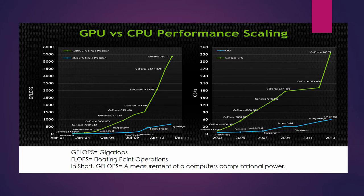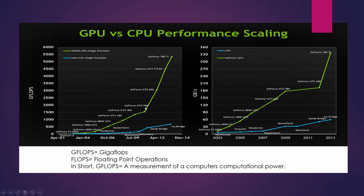Why GPU rendering? With this performance sheet provided by NVIDIA, GFLOPs equals GigaFLOPs, and FLOPs equals floating-point operations. In short, GFLOPs equals a measurement of a computer's computational power. On the left side in GFLOPs, the higher the number, the faster it's able to compute. Over here, this is gigabytes per second — the higher the number, the more it's able to push through on bandwidth. And that gives you a timeline of how much graphics cards have been developing over the course of about ten years compared to CPUs.